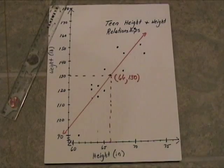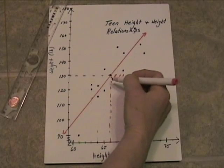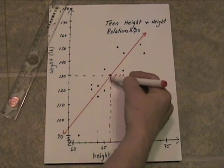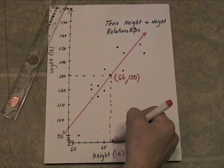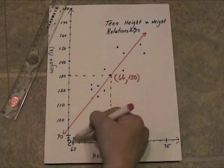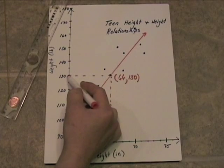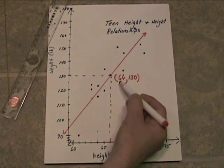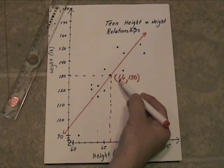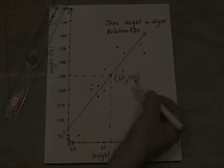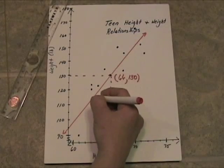Now let's go in and find the coordinates of these two points that we marked. As you can see, this point right here is over 66 on the height axis, and it's up 130 on the weight axis, so its coordinates would be 66, 130.